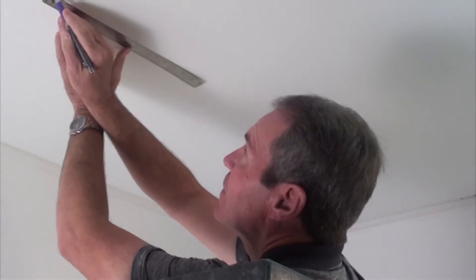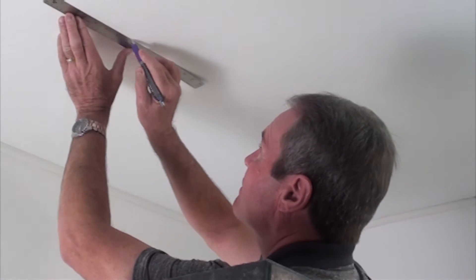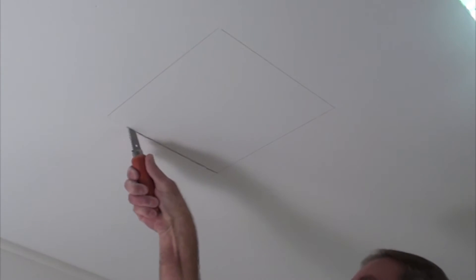Measure and cut an 11 and a quarter inch by 12 and a quarter inch opening in the hard lid ceiling or wall.